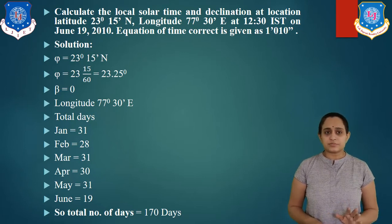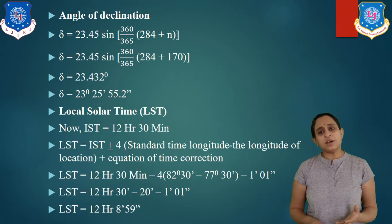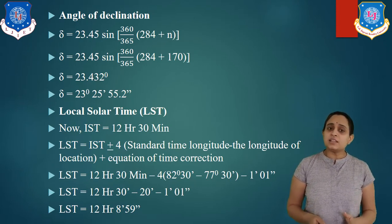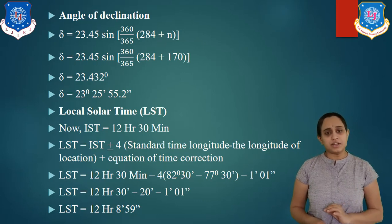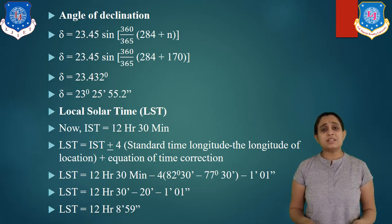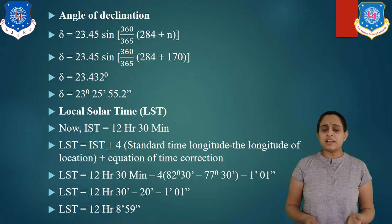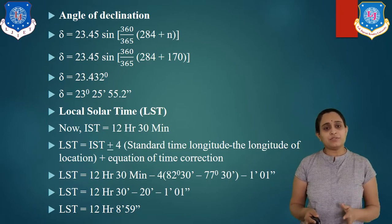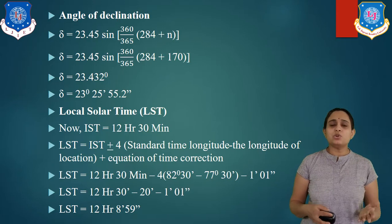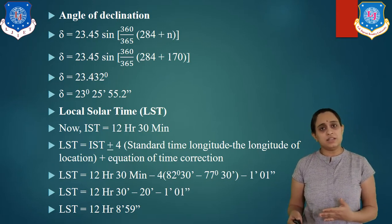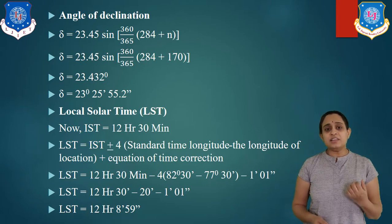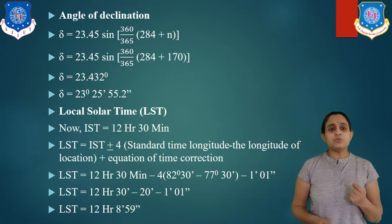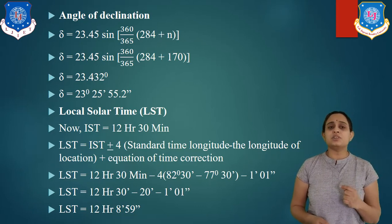After finding the number of days, we have to find the declination angle. The equation is: delta = 23.45 sin(360/365 × (284 + n)). Putting the value n = 170, we get: delta = 23.45 sin(360/365 × (284 + 170)). Finally, we get delta as 23.432 degrees, which we can convert to 23 degrees 25 minutes 55.2 seconds.